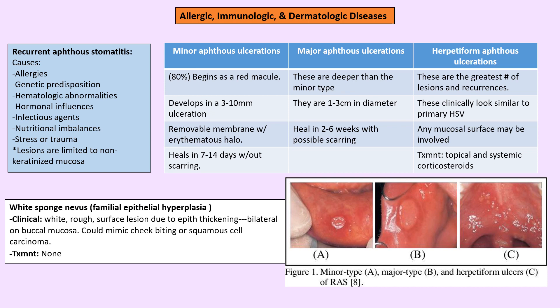Major aphthous ulcers are larger than one centimeter, heal in two to six weeks, and always have possible scarring. Herpetiform ulcers don't create scars but present as multiple crops of ulcers together and can be related to Behçet's disease or diabetes. White sponge nevus appears as a white rough surface lesion with epithelial thickening, resembling a cheek bite.